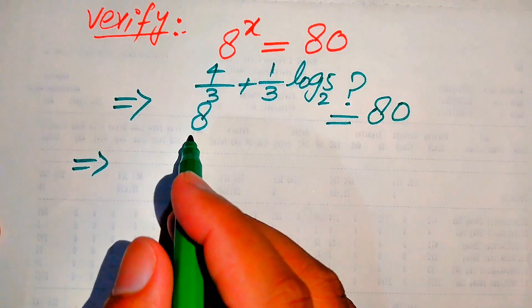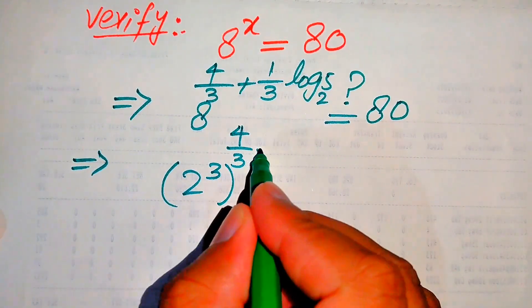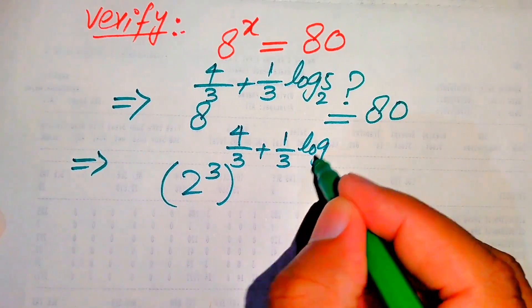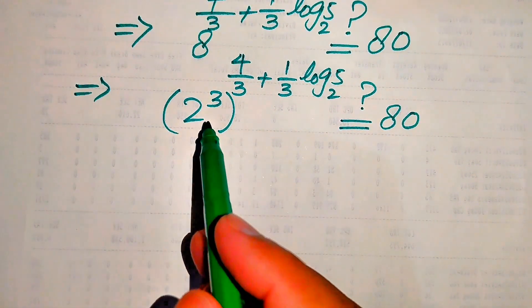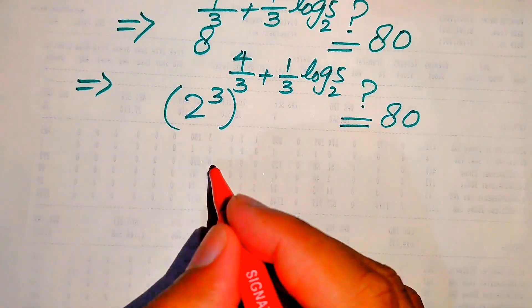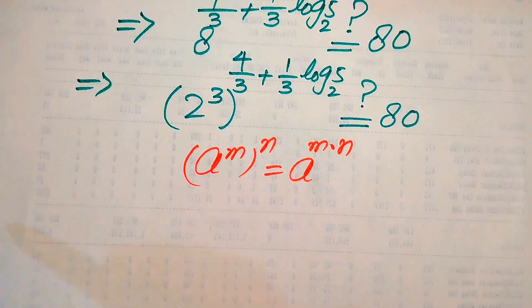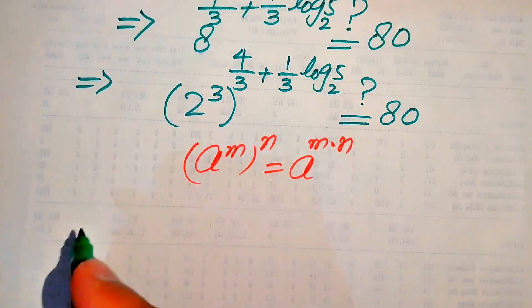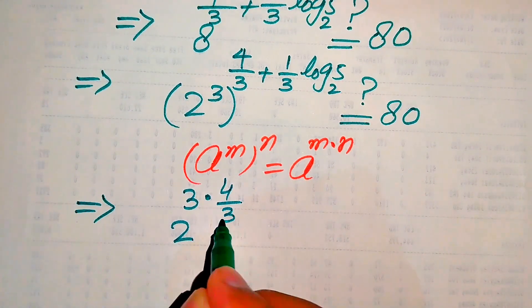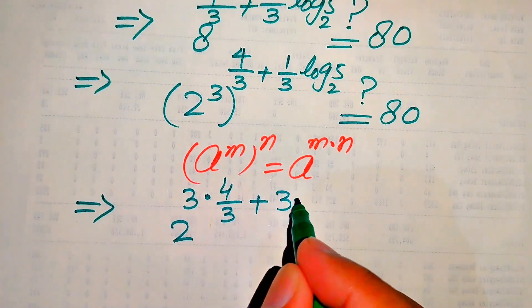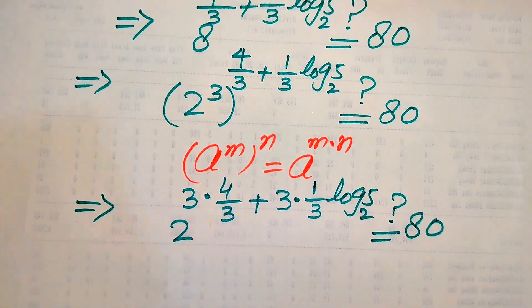First we write the base 8 in prime factor form as 2 cubed, with exponent 4 over 3 plus 1 over 3 times log base 2 of 5, and check that this equals 80. We then apply the exponential law: a to the power of m, to the power of n equals a to the power of m times n. According to this law, we multiply the exponent 3 onto each term, giving 2 to the power of 3 times 4 over 3, plus 3 times 1 over 3 times log base 2 of 5.